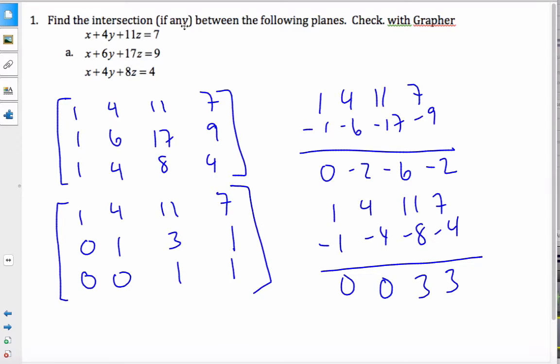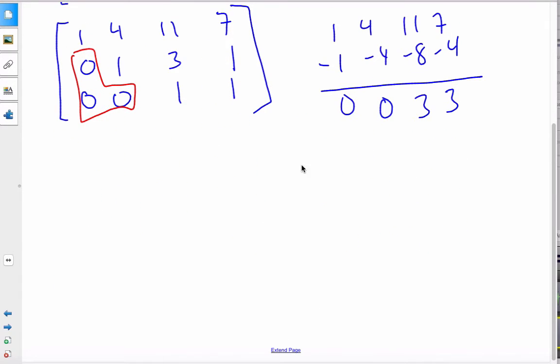And so my whole objective when doing these calculations is to get these three numbers to be 0. Once they're 0, then I can start to shift back to x, y's, and z's. And so this thing here says 1z is equal to 1, so z equals 1. This row here says y plus 3z, which was 1, is also equal to 1. And so y is equal to 1 minus 3, which is negative 2.